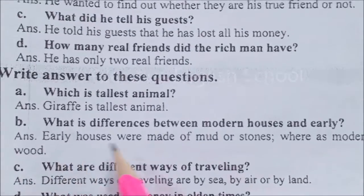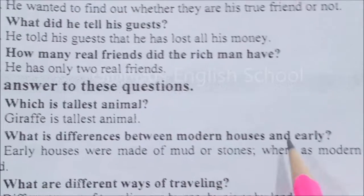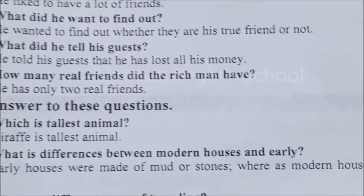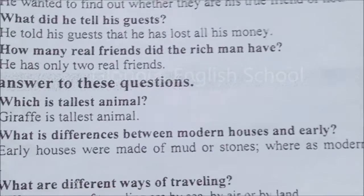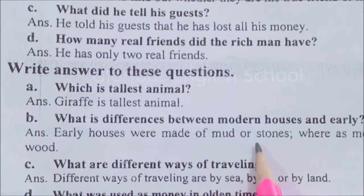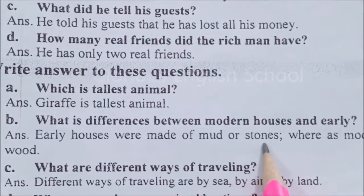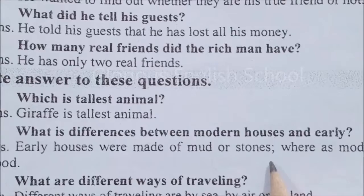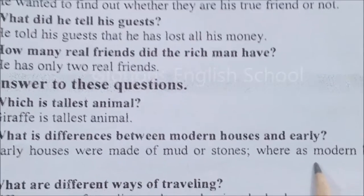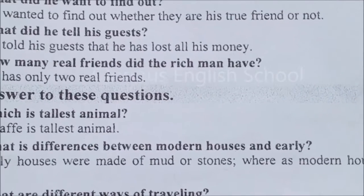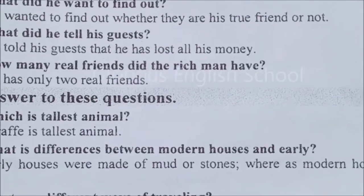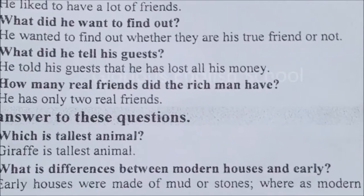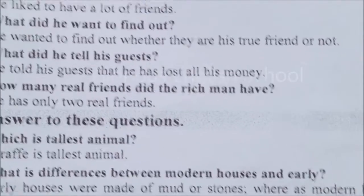Question number two: what is the difference between modern houses and early houses? Ke jadeed zamaane ke aur pehle ke waqt ke gharon mein kya fark hai? Early houses were made of mud or stones, whereas modern houses are made of concrete and wood.